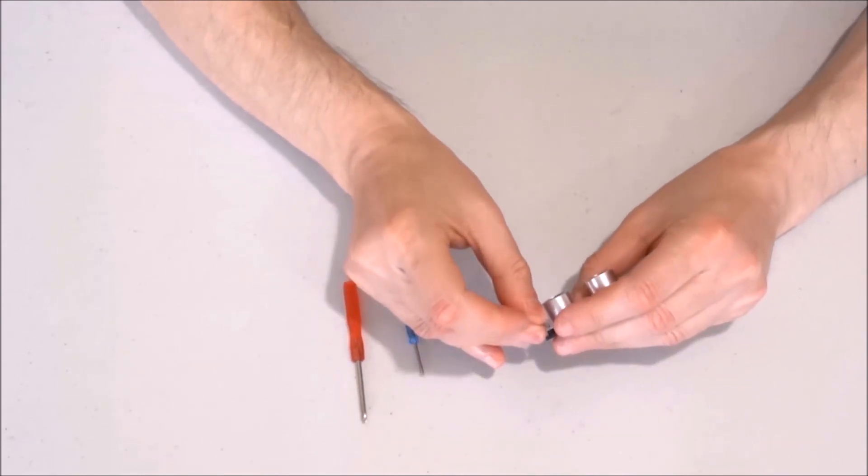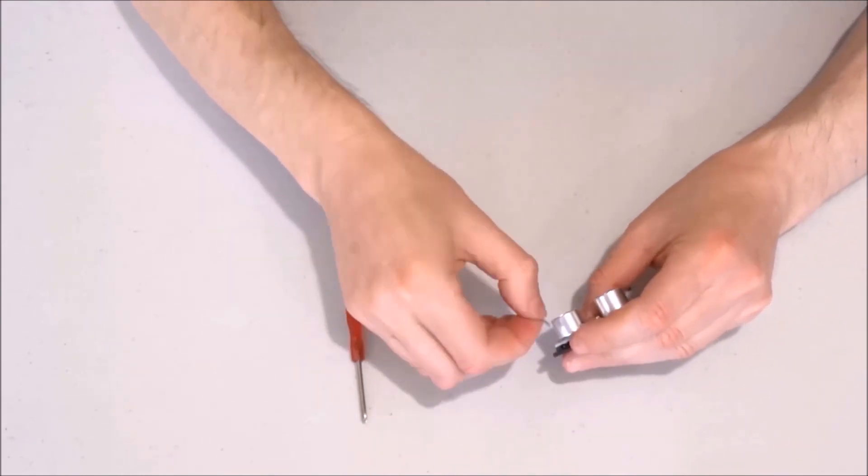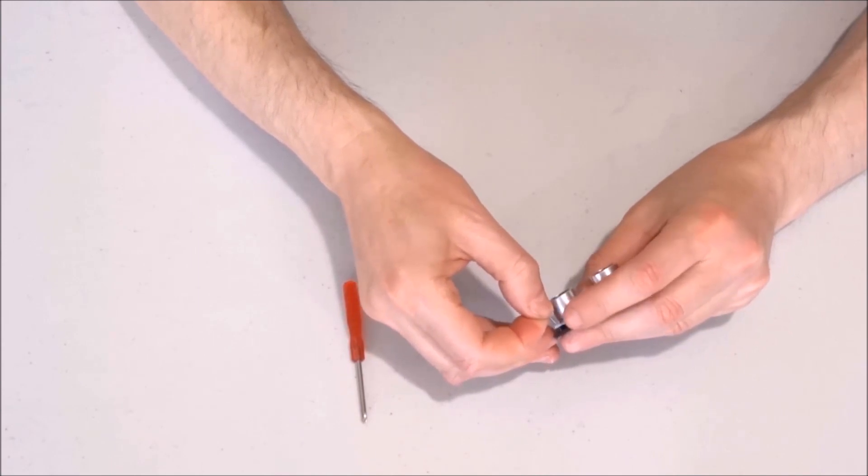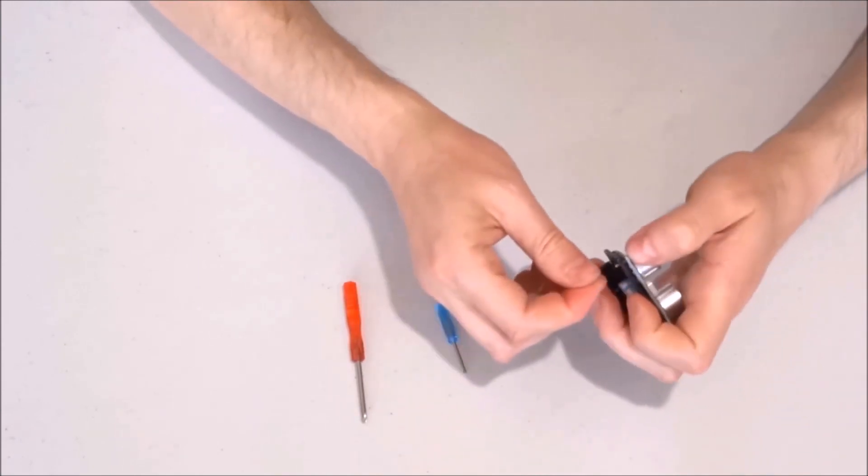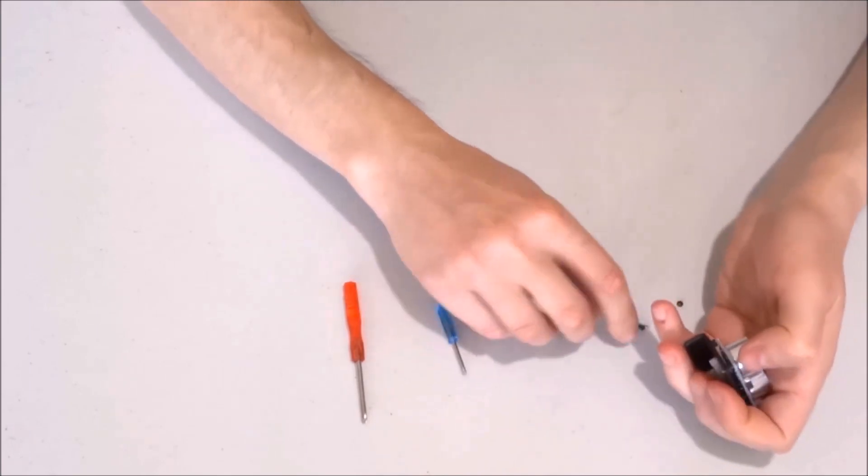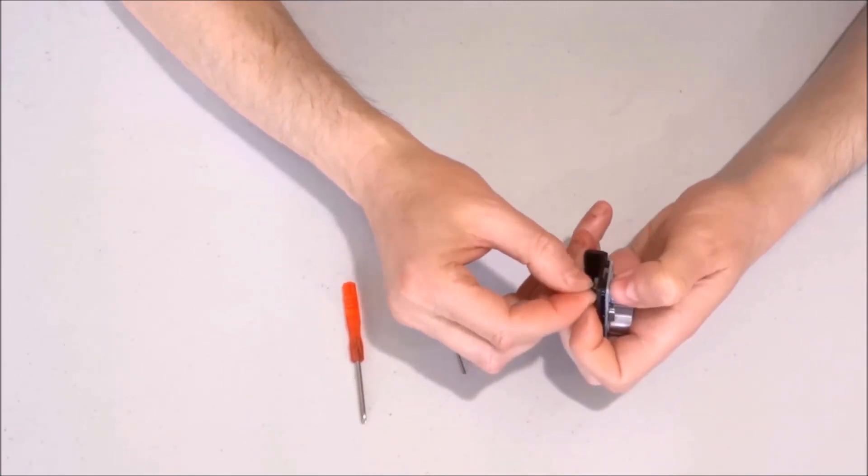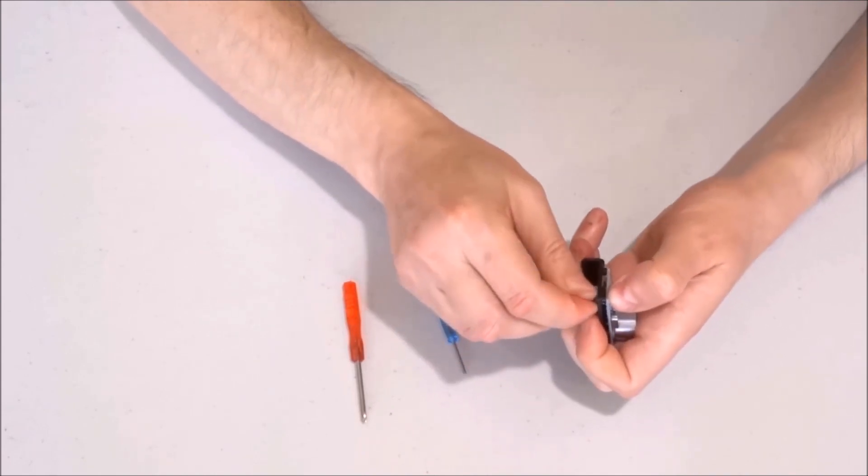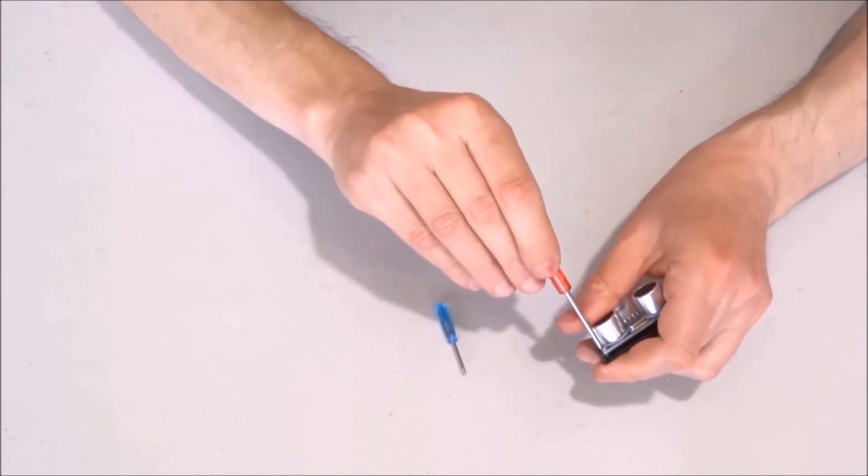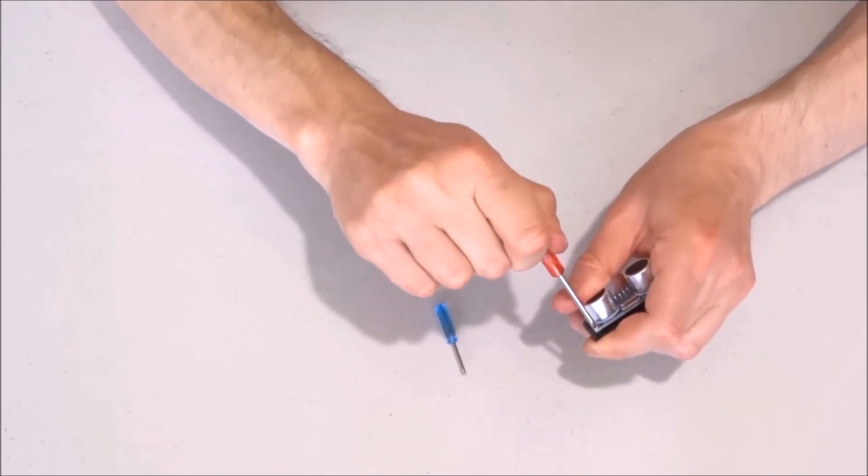So I'll take the second bolt, insert it through the hole. Put the really small nut on this side and use the screwdriver to tighten.